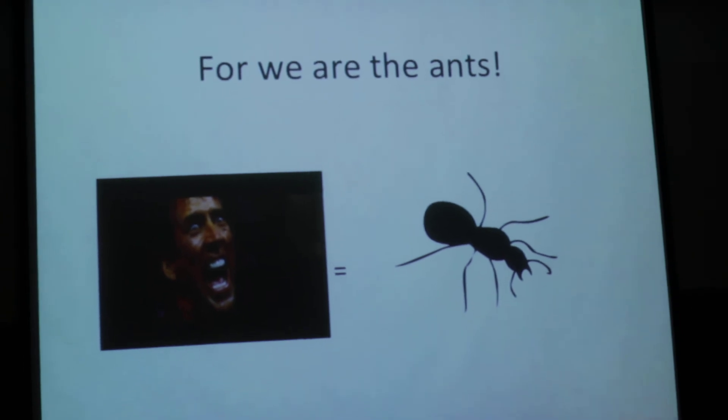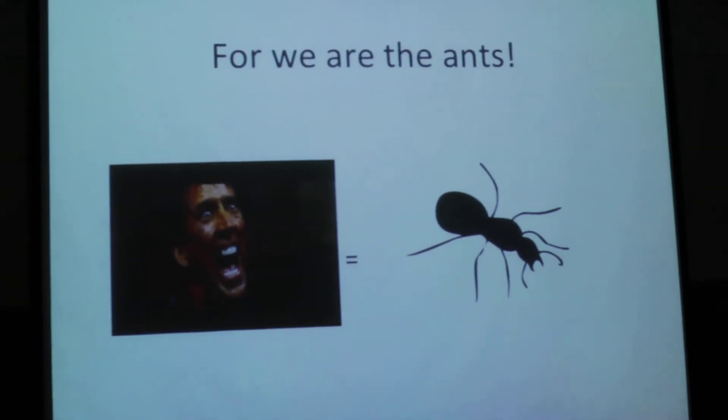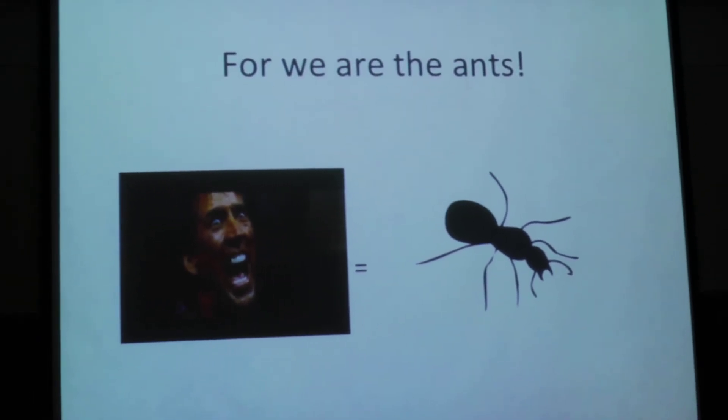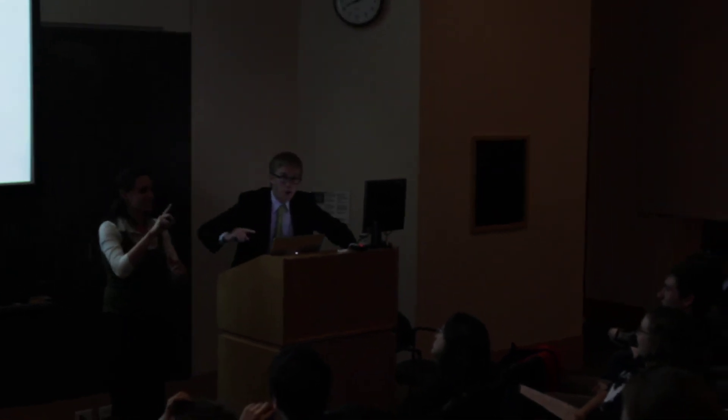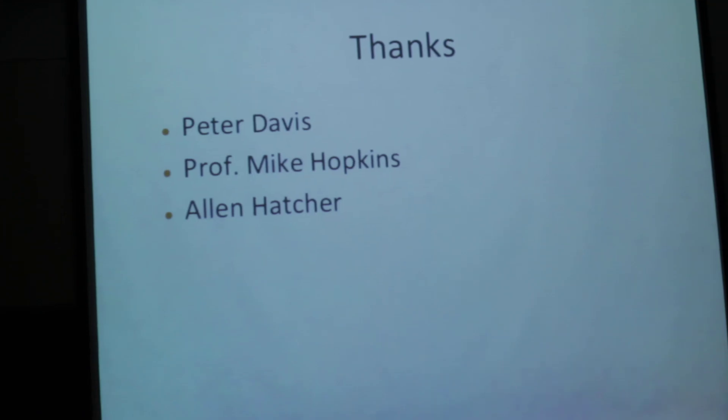This story is in fact an allegory, because we are the ants, and God is our local miscreant. Instead of imprisoning us on the surface, he's imprisoned us in a three-dimensional universe. But maybe, with the power of homology and our magic marker lines, we can find out what shape that universe is, both on the very large and on the intraparticular scales. So ladies and gentlemen, let us begin to draw. Thanks to Peter Davis, Professor Mike Hawkins, Alan Hatcher, and myself.